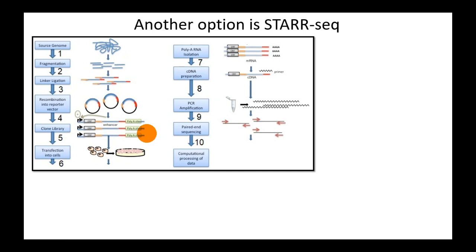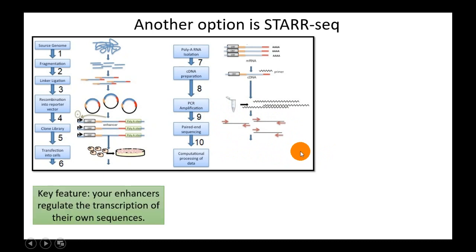Your fragments are inserted into the 3' untranslated region of the reporter gene. Then you perform cell transfection, yielding mRNA transcripts each containing sequences of both your reporter gene and enhancer. You isolate that mRNA, make cDNA using reverse transcription PCR, then implement paired-end sequencing. The key feature of this method is that enhancers regulate the transcription of their own sequences.